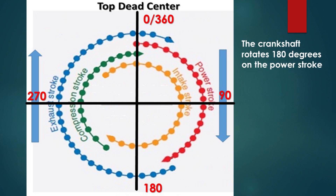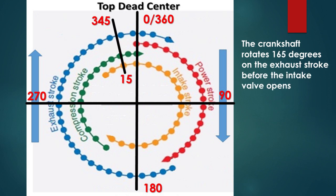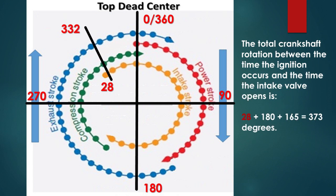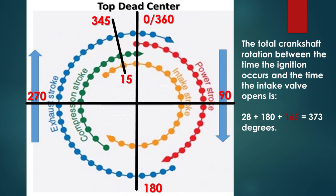The crankshaft then rotates 180 degrees through the power stroke. From the power stroke, the crankshaft rotates 165 degrees on the exhaust stroke before the intake valve opens. The total crankshaft rotation between the time the ignition occurs and the time the intake valve opens is: 28 degrees before top dead center, plus 180 degrees from top dead center to bottom dead center, plus 165 degrees from bottom dead center to 15 degrees before top dead center — which totals 373 degrees for total crankshaft rotation between the time the ignition occurs and the time the intake valve is open.